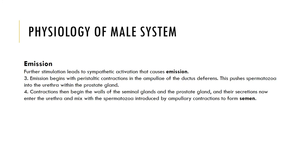Emission is the propulsion of semen from the male duct system as a result of a spinal reflex. Further stimulation leads to sympathetic activation that causes emission; peristaltic contractions of the vas deferens propel sperm towards the urethra within the prostate gland. The seminal glands and prostate gland begin contracting and their secretions mix with the sperm to form semen. The bladder sphincter muscle constricts, preventing the expulsion of urine.